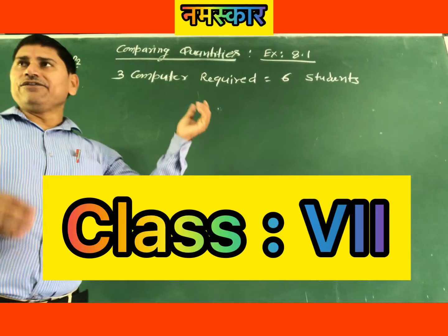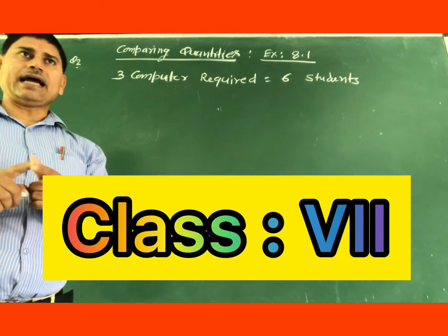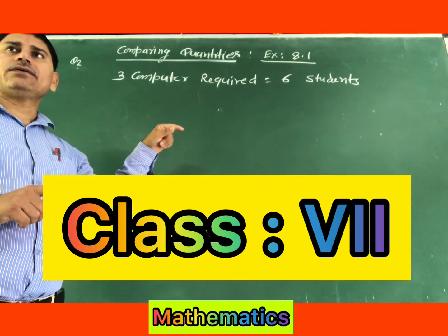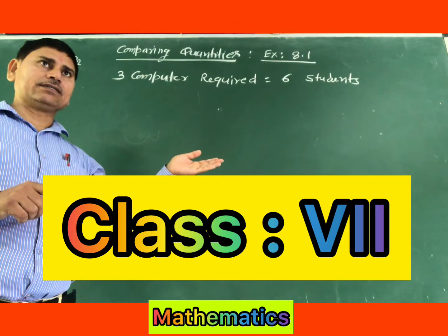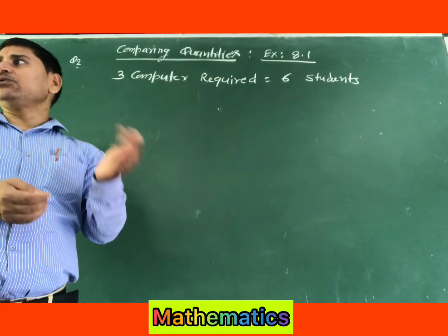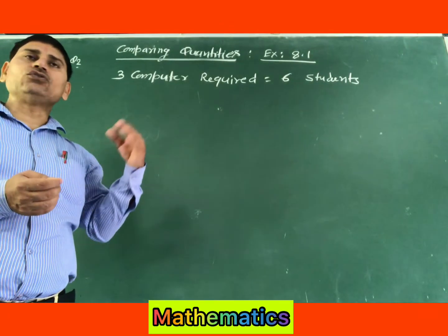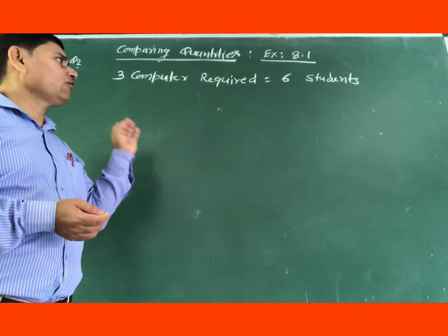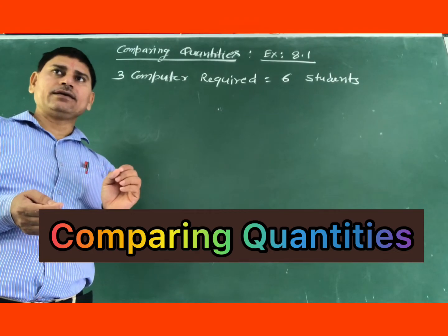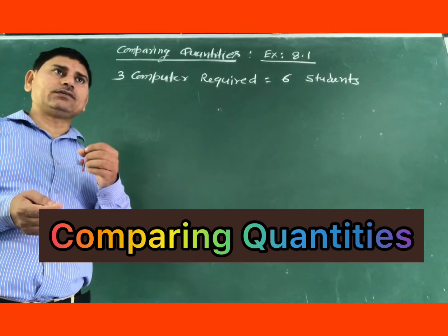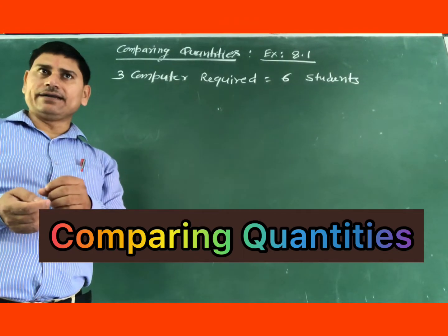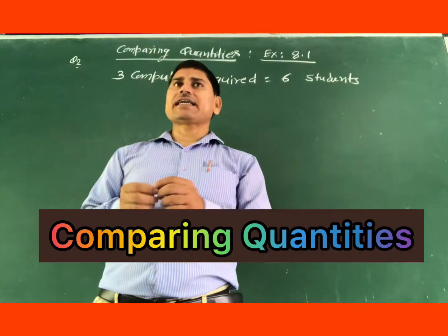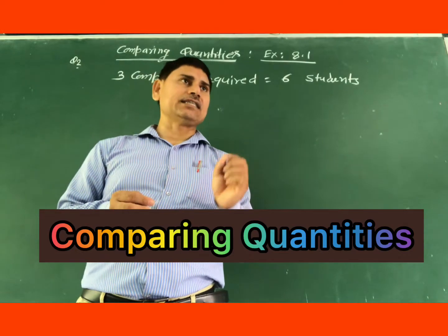According to the information in the question, 3 computers are needed for 6 students. So how many computers are needed for 24 students? To find the answer, we will use the unitary method, which you learned in the previous class, that is in class 6.